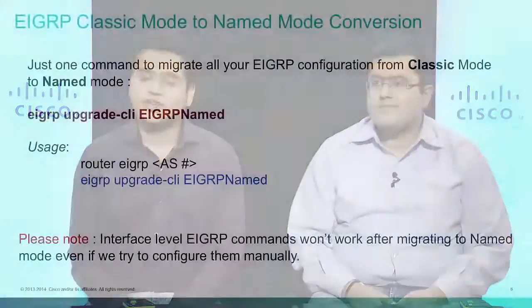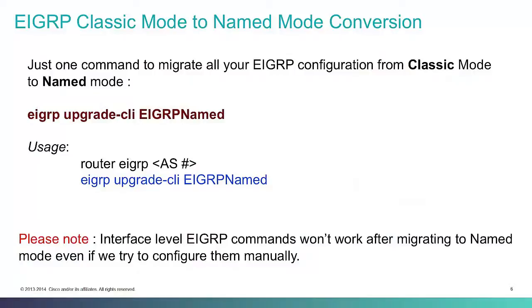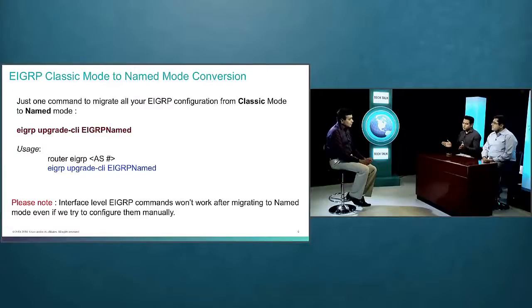Since most customers have been using EIGRP in classic mode and will need to migrate to name mode, how easy is it to migrate? Honestly, it does not get any easier. It's just one single command — one moment you are running classic mode, you type that one command, and you are on name mode. All the commands from the interface level are automatically moved to their equivalent commands at the router level, all with zero downtime.